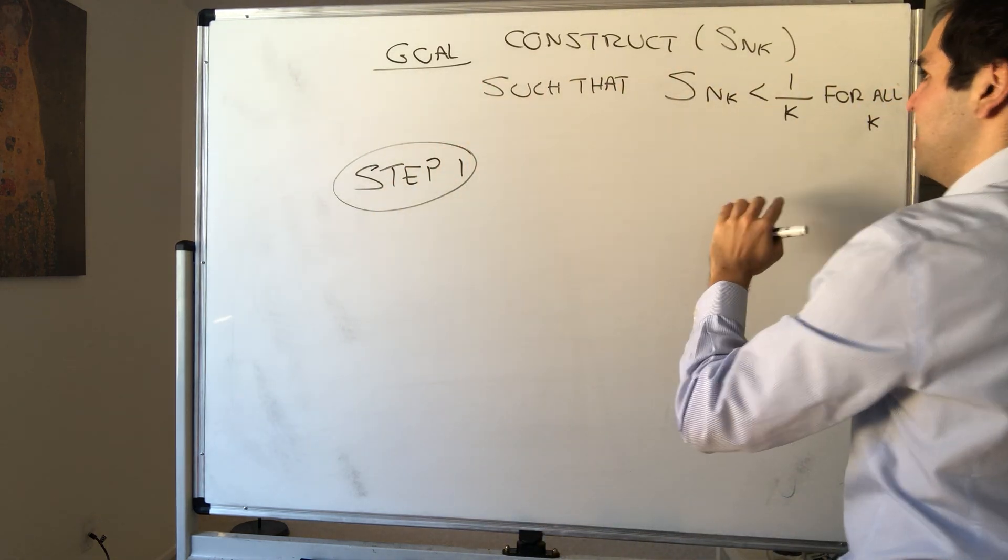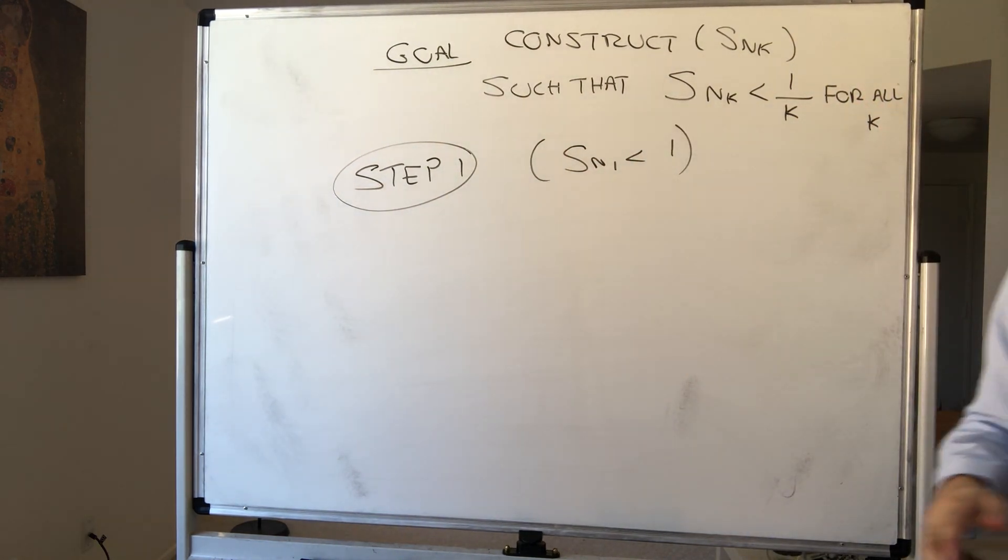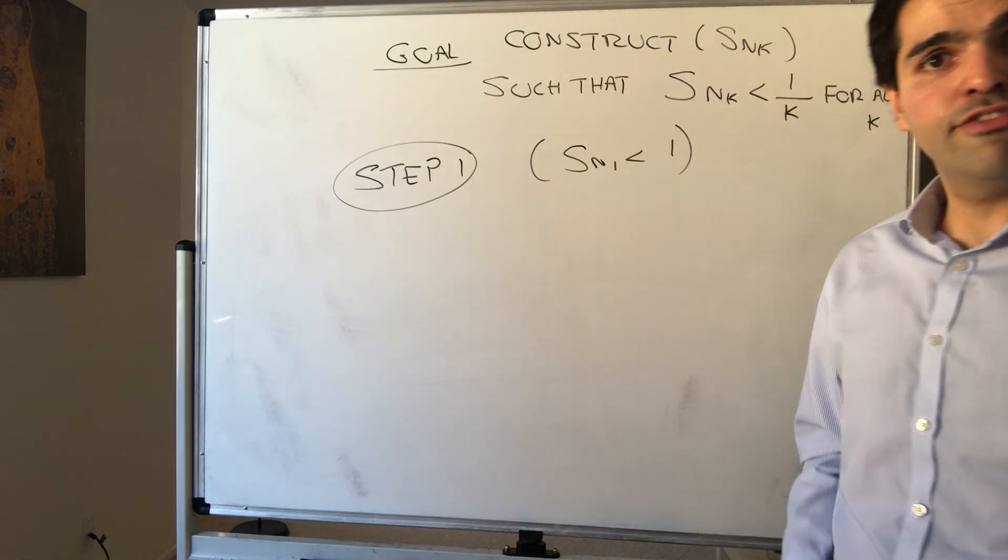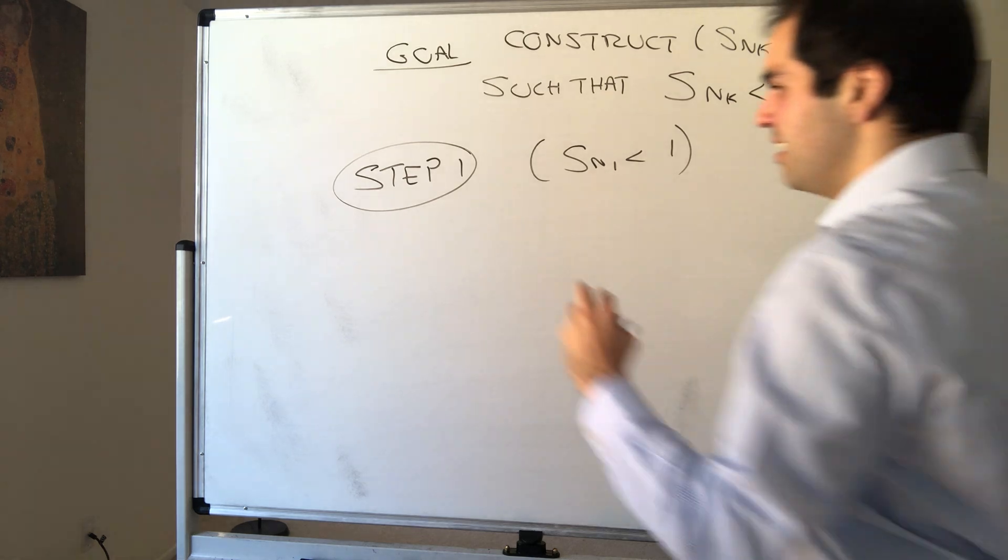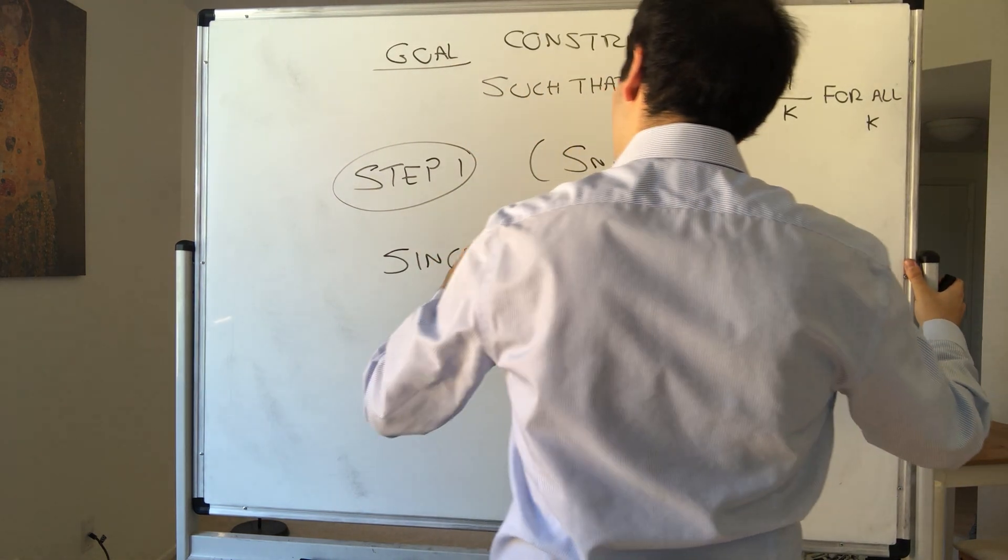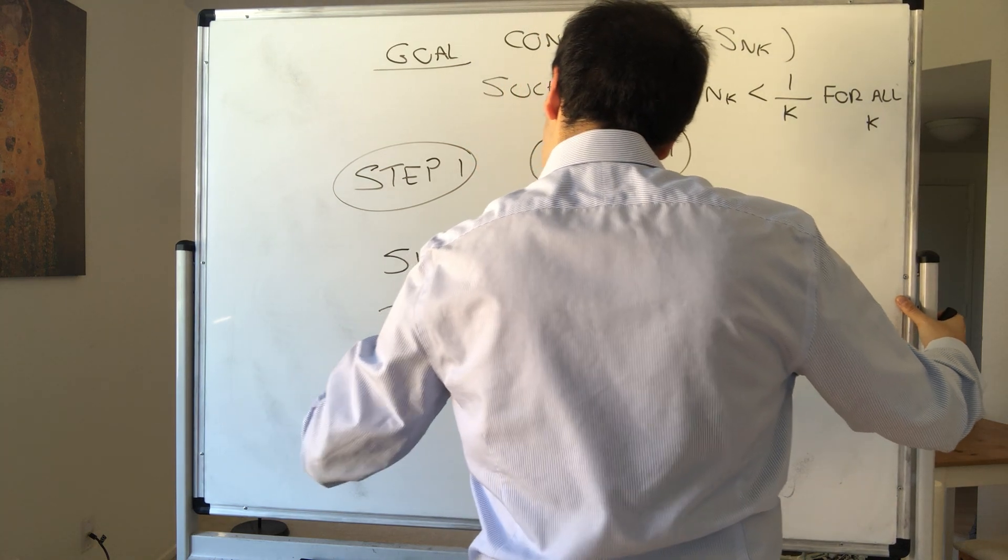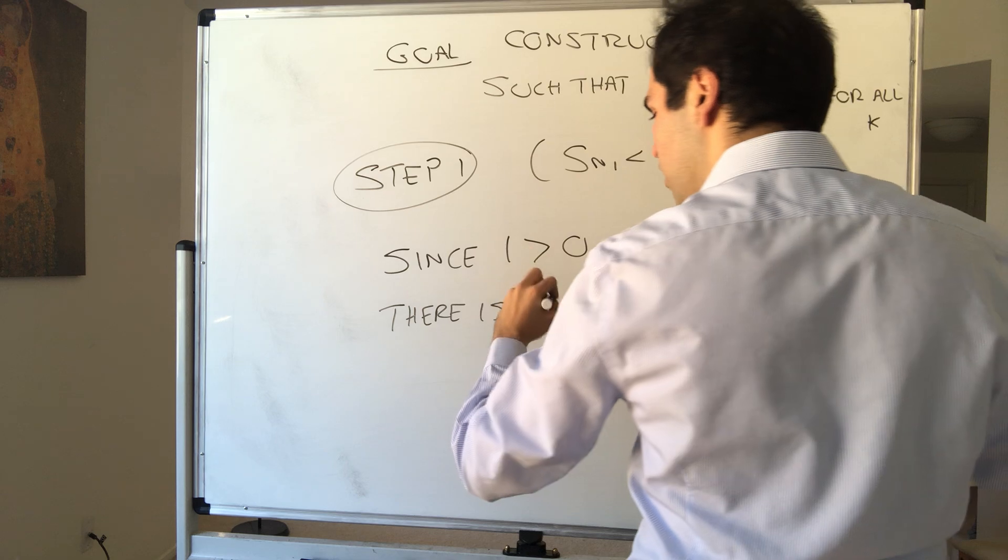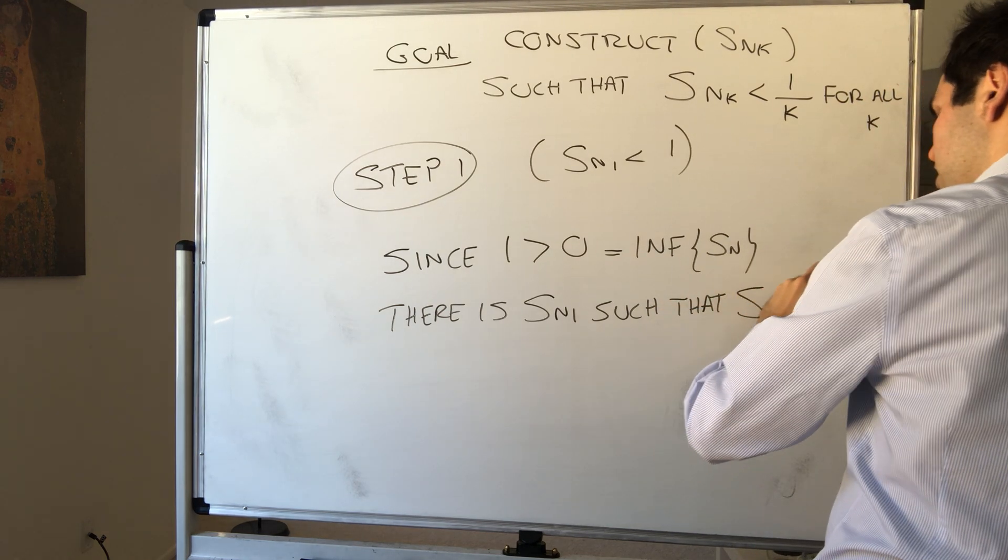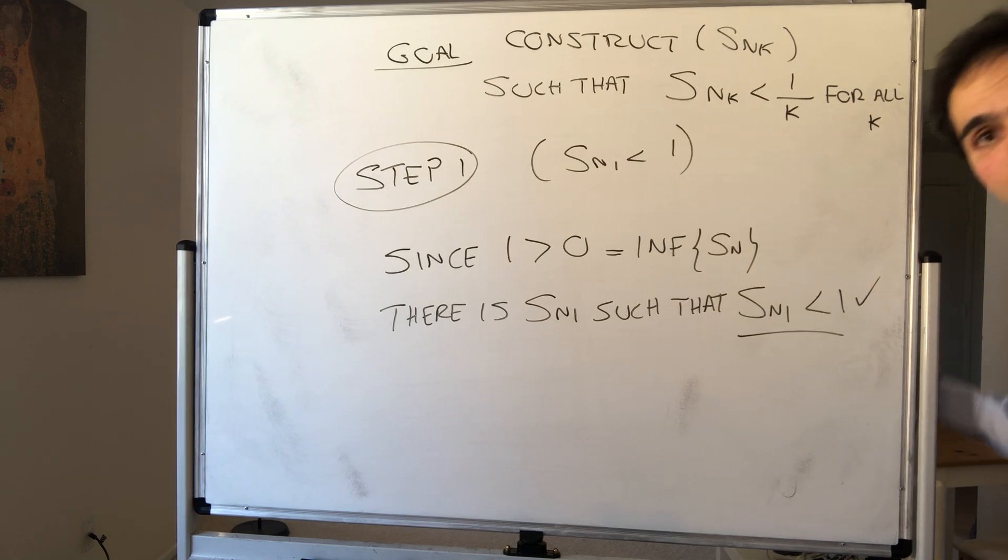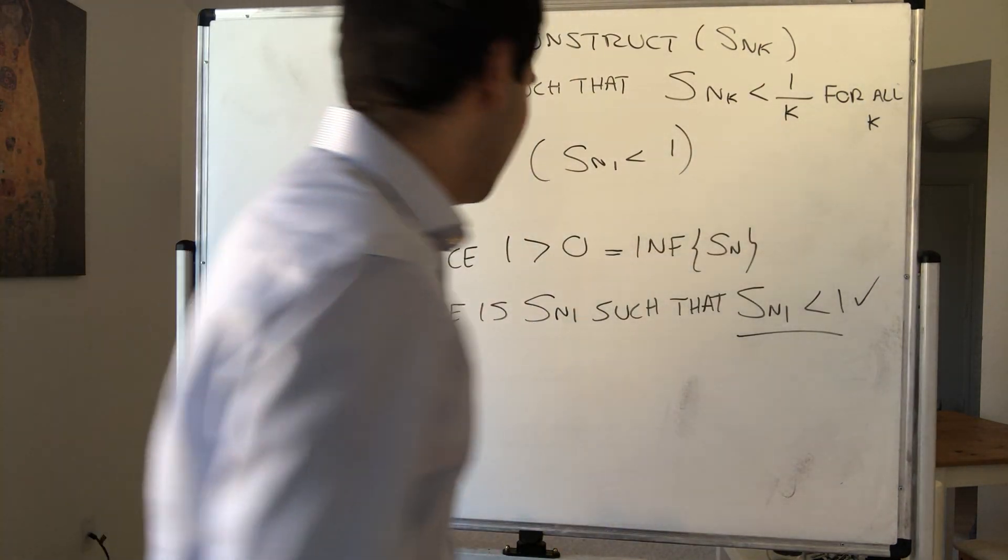So step one, let's do the following. Kind of the base case, so let's find Sn1. So what do we want? We want Sn1 to be less than 1. But look, remember the infimum is zero. So definitely 1 is bigger than the infimum, but that just means, remember, that you're not the worst student. So there's someone worse than you. So since 1 is bigger than zero, which is the infimum of Sn, there is some element in there, let's call it Sn1, such that Sn1 is less than 1. And that's precisely what we want, just some term less than 1. And that works because the minimum is zero, so there should be a term definitely less than 1.